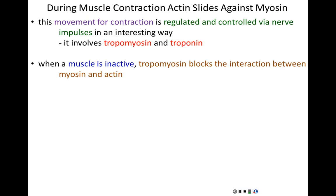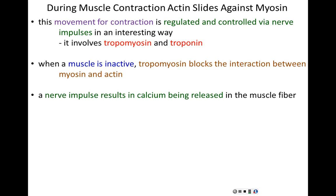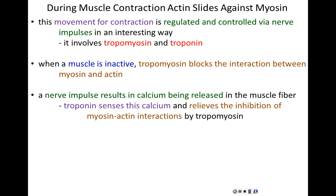When a muscle is inactive — when a sarcomere muscle fiber is not getting signals to contract — tropomyosin is repressive in the sense that it blocks the interaction between myosin and actin, inhibiting the muscle's ability to contract. When a muscle fiber gets hit with a nerve impulse, the main result is that calcium is released in the muscle fiber. Troponin senses this calcium, and by binding to calcium, troponin relieves the inhibition of myosin-actin interactions by getting tropomyosin out of the way.